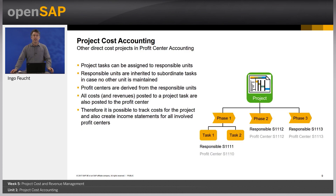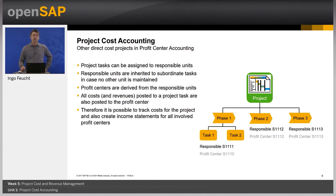We are now looking at profit center accounting and how profit centers can be used together with projects. One use case would be to establish a matrix organization, with costs being in the responsibility of both projects and profit centers. You would assign responsible units to project tasks, from which profit centers are derived. All costs and revenues posted to a project are also posted to the profit center. Therefore, it is possible to track costs for the project and also create income statements for all involved profit centers — you can have one project but multiple profit centers involved, viewing costs and revenues in a matrix organization.